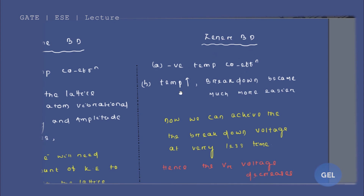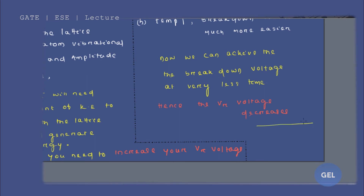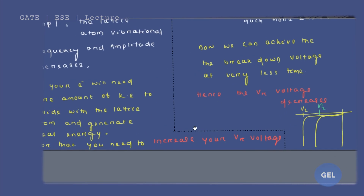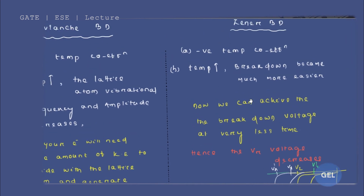But in the case of Zener breakdown, if you increase the temperature, breakdown becomes much easier — we can achieve the breakdown voltage at a lower voltage. Hence the Zener breakdown voltage (Vz) decreases. If initially breakdown was at Vz, now it occurs at Vz' (a lower value), because with increased temperature you don't need as much applied voltage for breakdown to occur. But in avalanche breakdown, you need much more voltage than the standard case, since the lattice atoms are not in the right position.